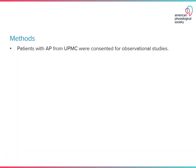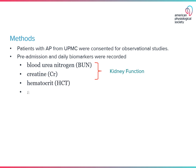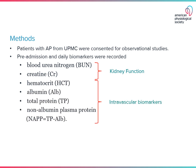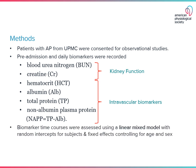To test this hypothesis, we recruited patients with acute pancreatitis from the University of Pittsburgh Medical Center and consented them for observational studies. We measured pre-admission and daily biomarkers, including BUN and creatinine for kidney function, hematocrit, albumin, and total protein for intravascular biomarkers, and calculated non-albumin plasma protein by taking the total protein and subtracting albumin. Biomarker time courses were assessed using a linear mixed model, and all available images were reviewed for pancreatic necrosis.